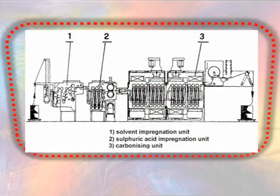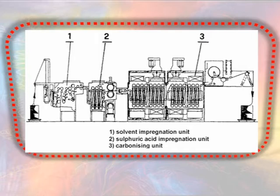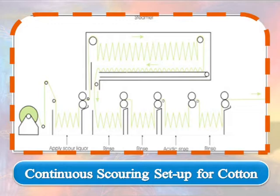Scouring removes natural fats and waxes present in the fiber. It also removes seed fragments, any remaining water-soluble impurities, and soil, husk, etc., which may have been trapped in the fiber mass during collection and transportation. The traditional scouring of cotton goods involves treatment with sodium hydroxide solution at quite high temperature.